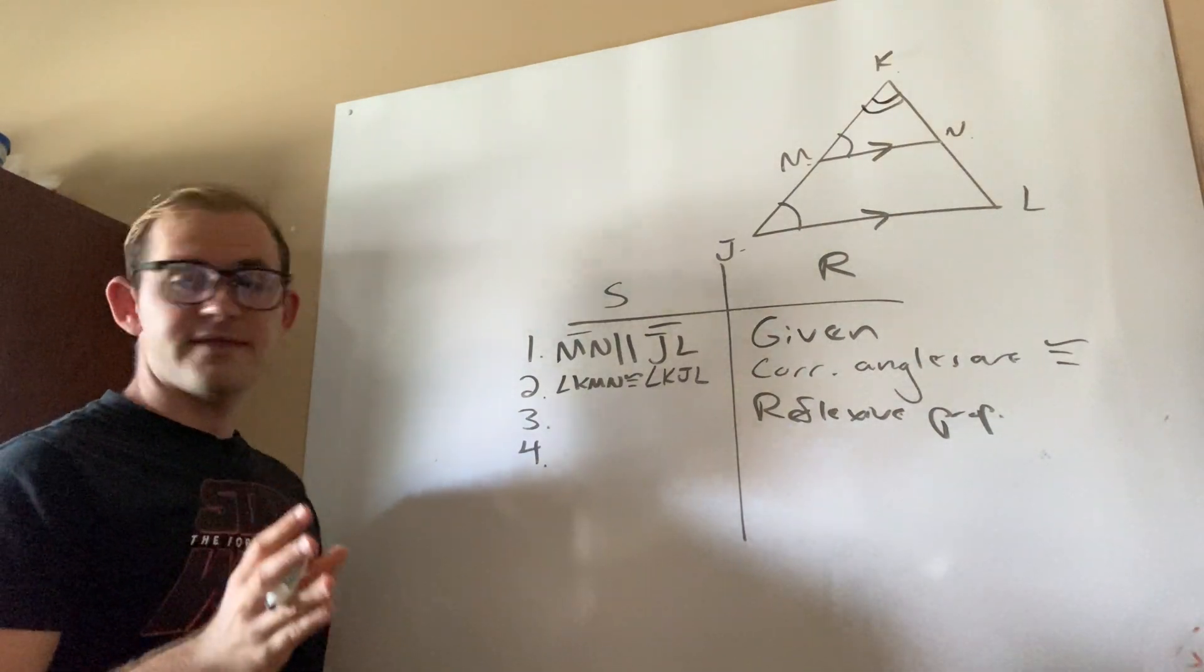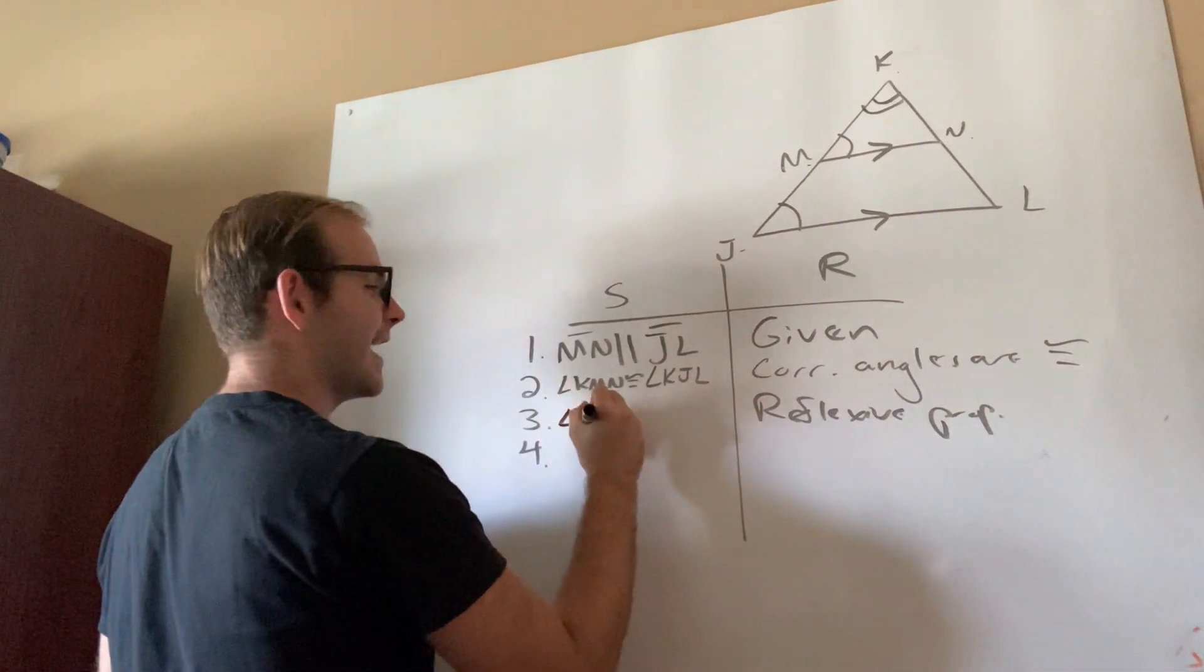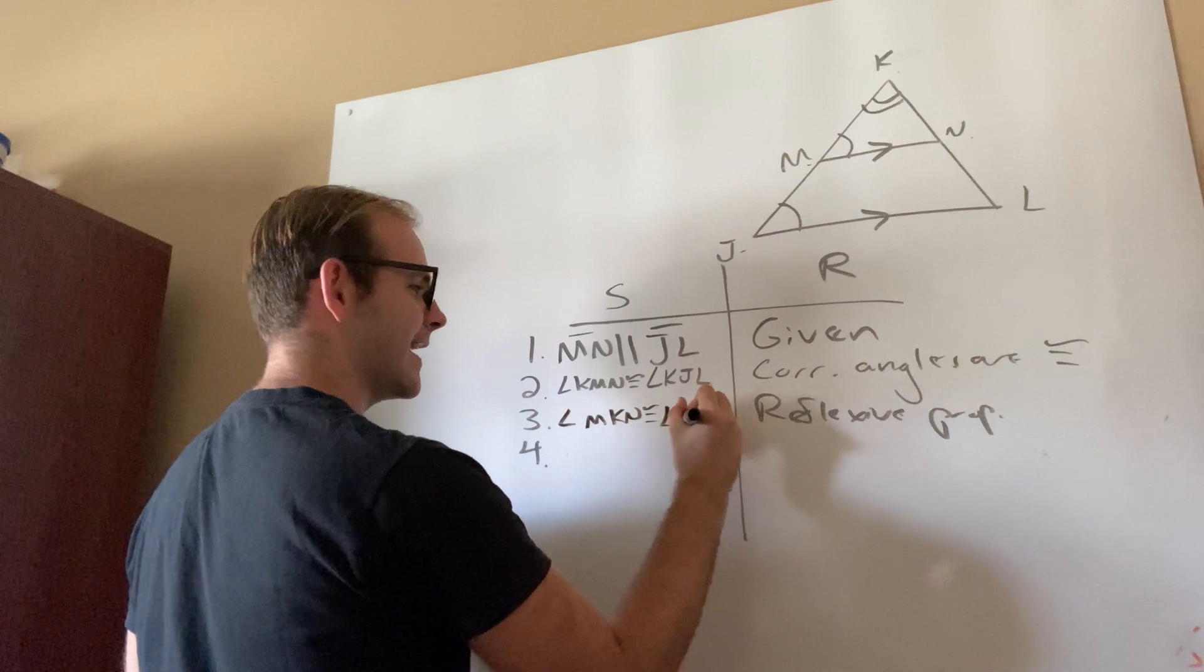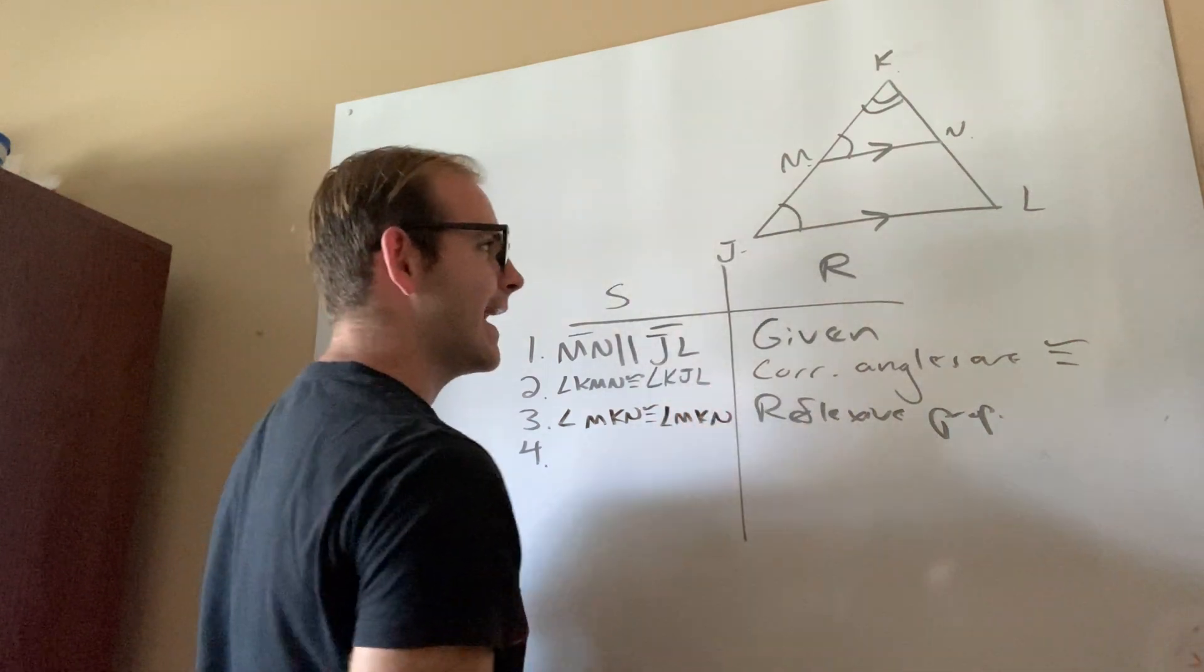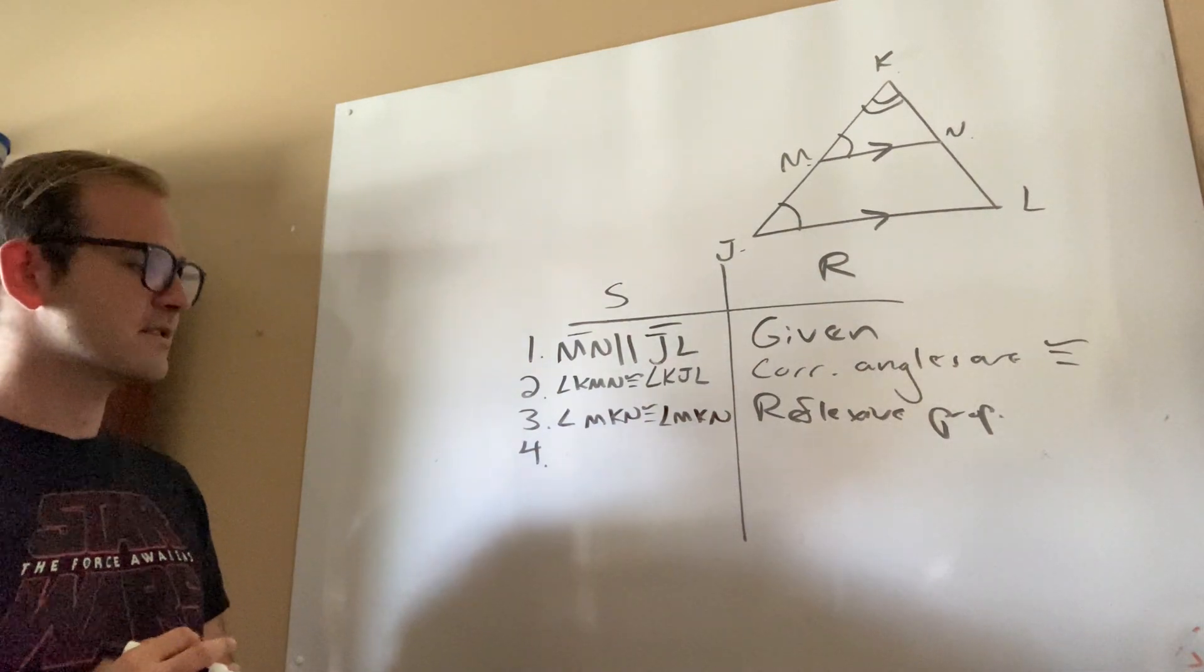So guess what that means? That means that I can say that angle MKN is congruent to itself, angle MKN. And because it's shared between both triangles, it's the reflexive property we use to justify it.